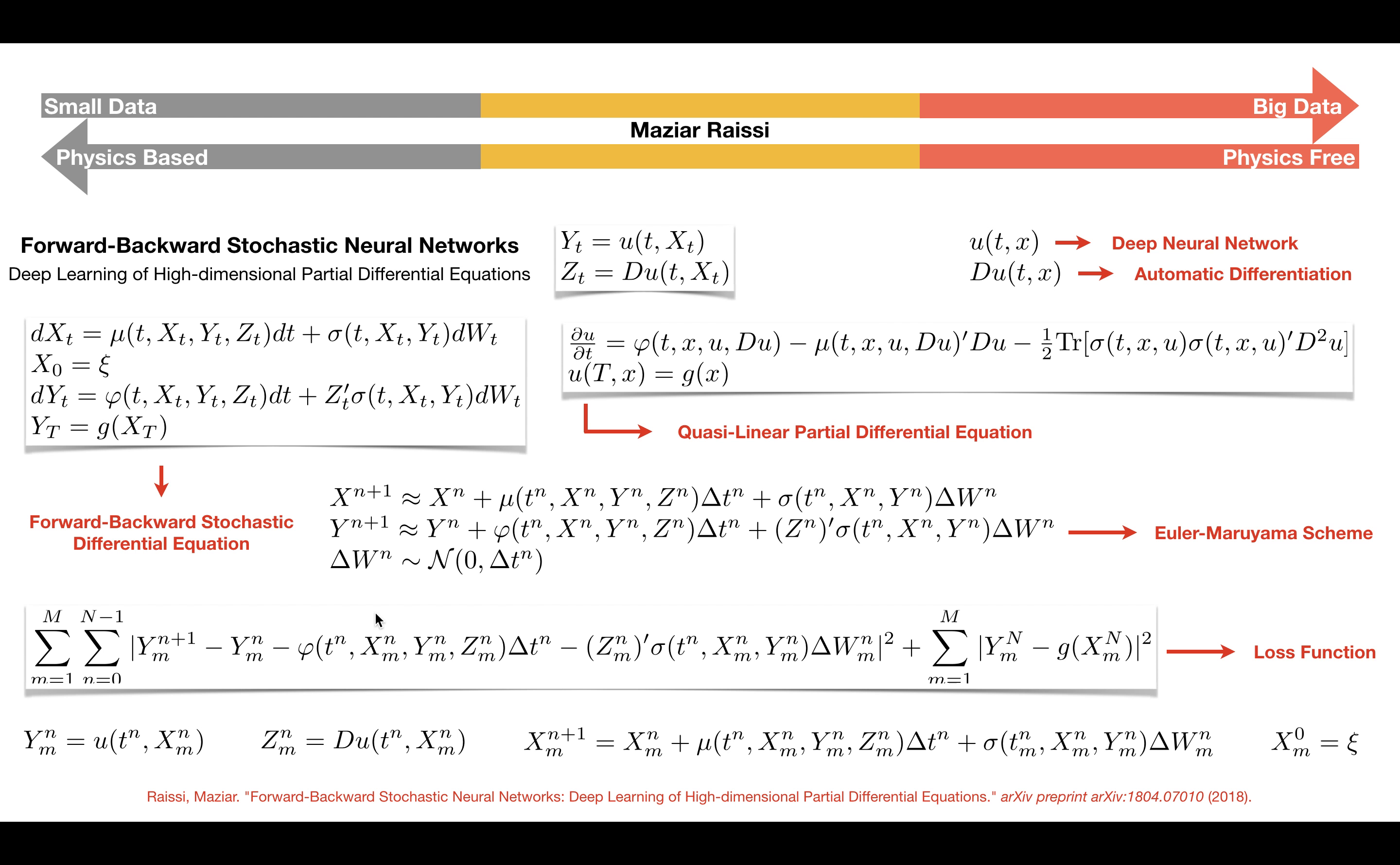Here, delta w is a random variable with mean 0 and variance delta t. Independent realizations of this random variable will act as training data. The resulting loss function corresponds to m different realizations of the underlying Brownian motion.